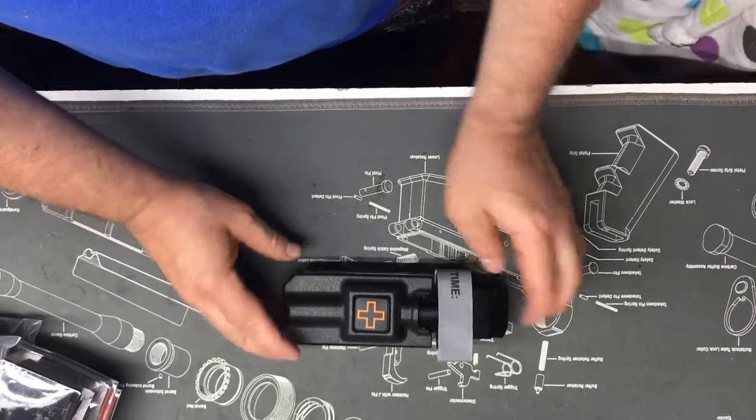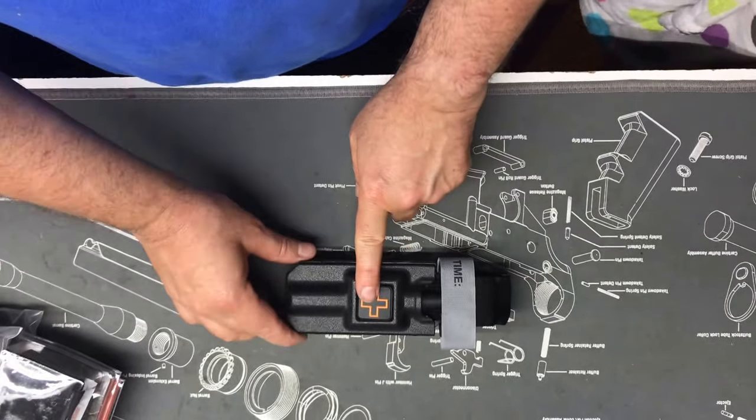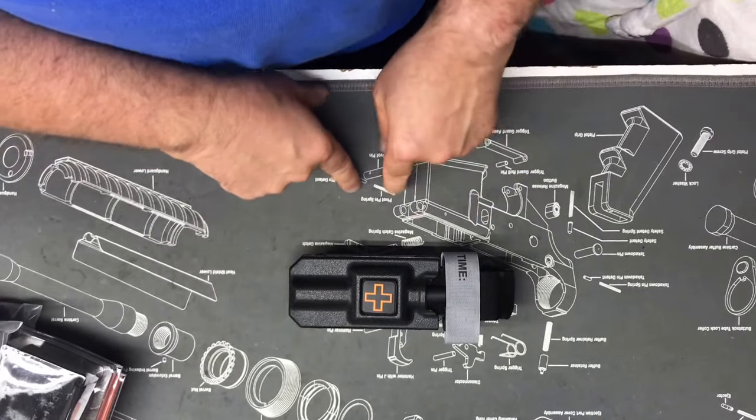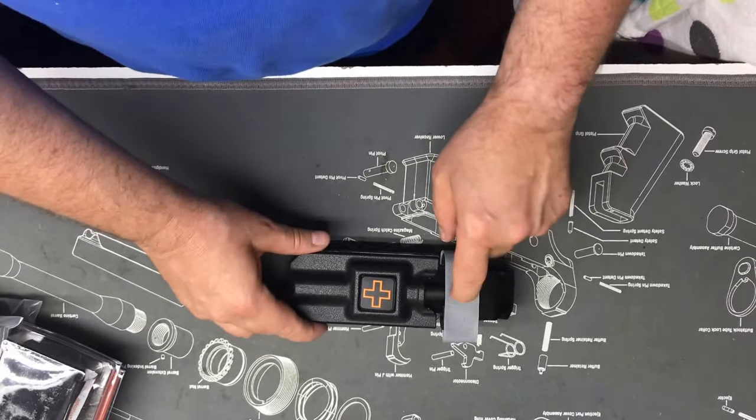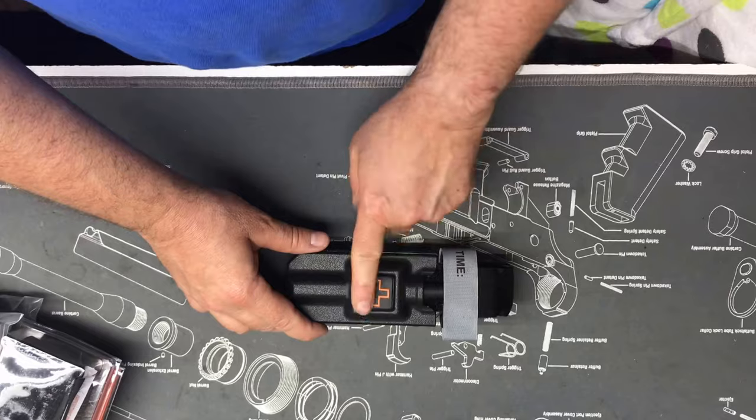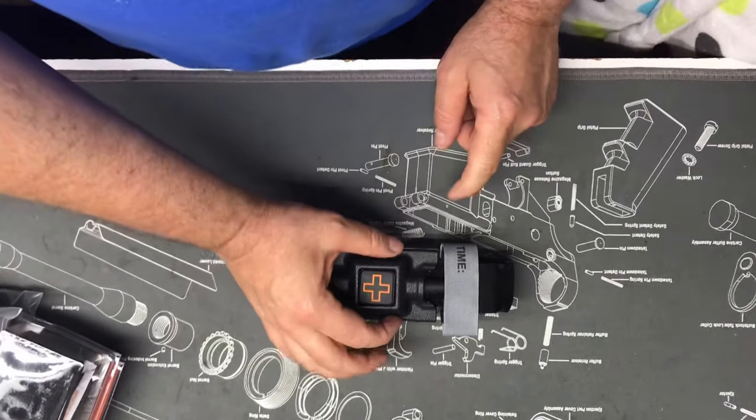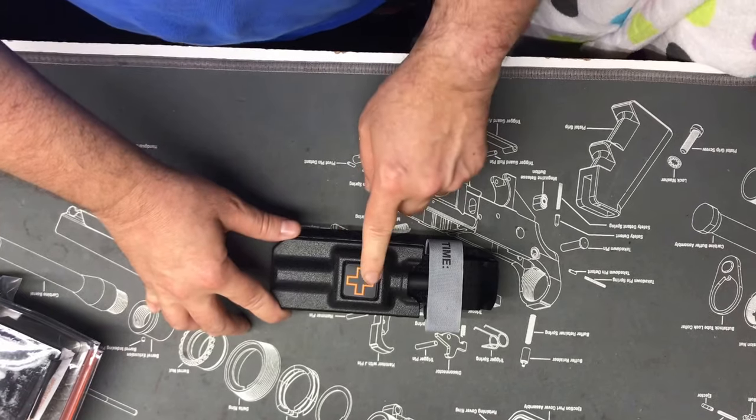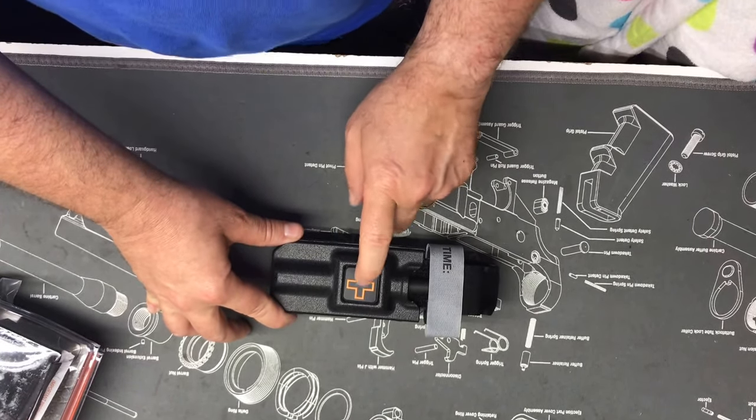Another issue that I have seen is the new Recon Medical tourniquets that look like the CAT tourniquets will not fit into these cases because the buckle on them is just a little bit too wide. So that information has been sent to Recon Medical and also to 1110.